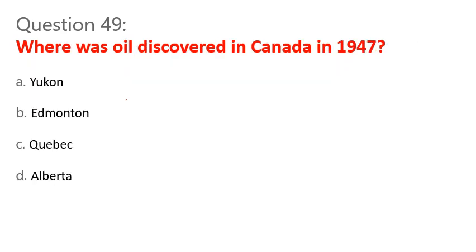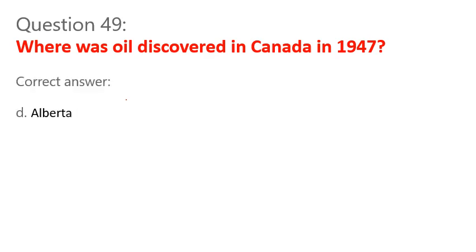Question 49. Where was oil discovered in Canada in 1947? A. Yukon. B. Edmonton. C. Quebec. D. Alberta. Correct answer: D. Alberta.